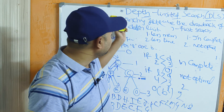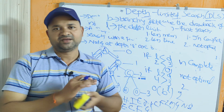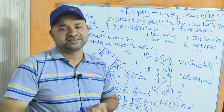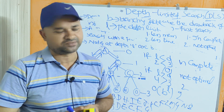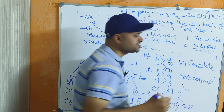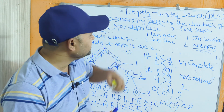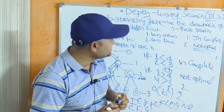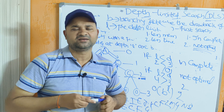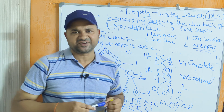Just like DFS, Depth Limited Search is also incomplete — if the state space is infinite, we may not find the solution. It is also not optimal, as it will not always give the best solution. That concludes the discussion on the DLS algorithm. Please like the video, subscribe to the channel, and share it with your friends. Thanks for watching.